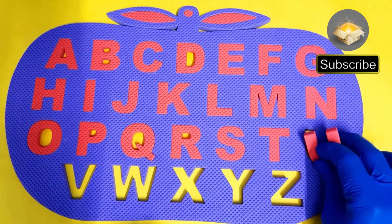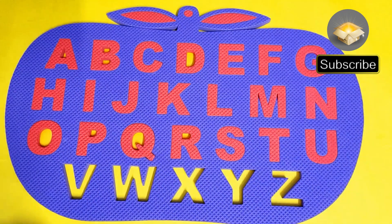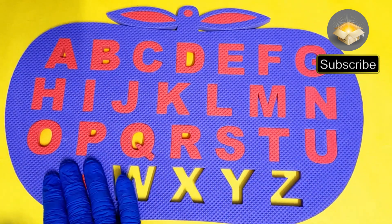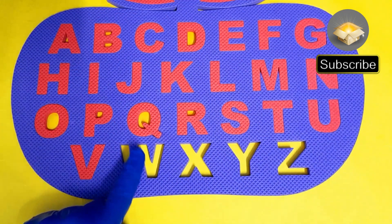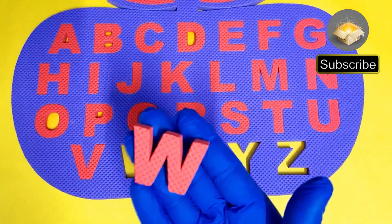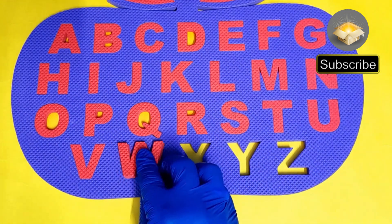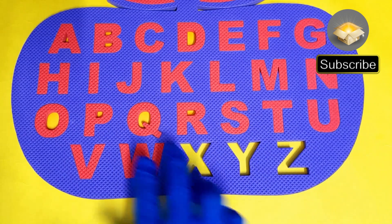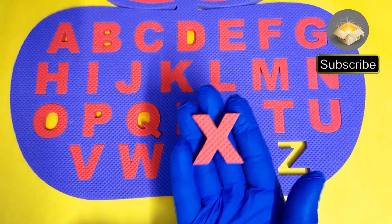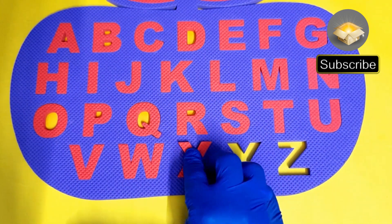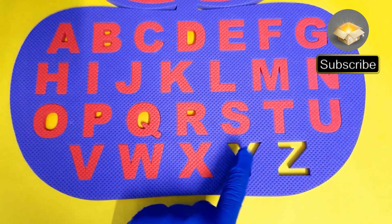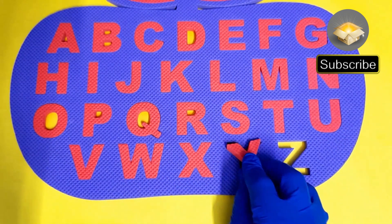U for Willow. V for Van. W for Water. X for Fox. X for Fox. Y for Yellow.